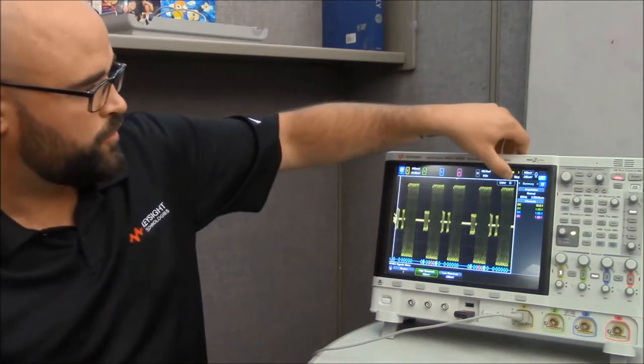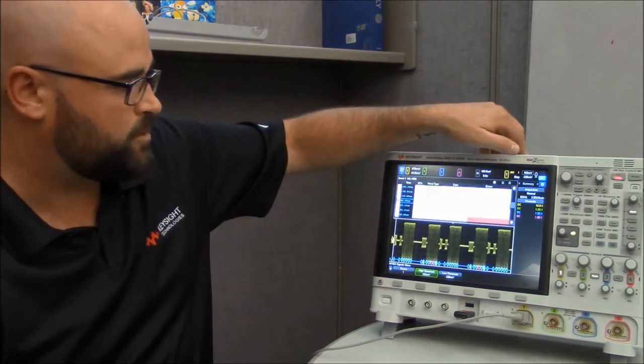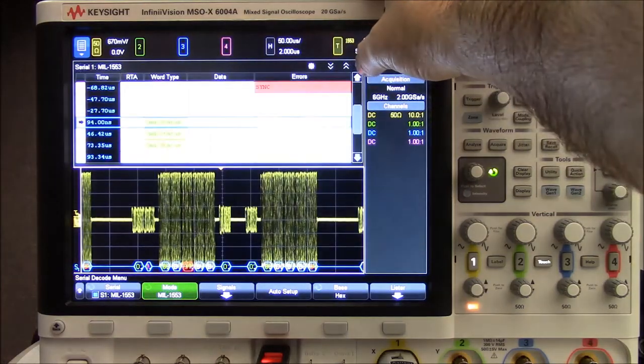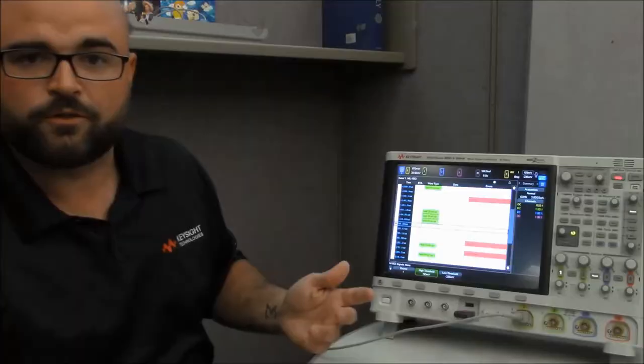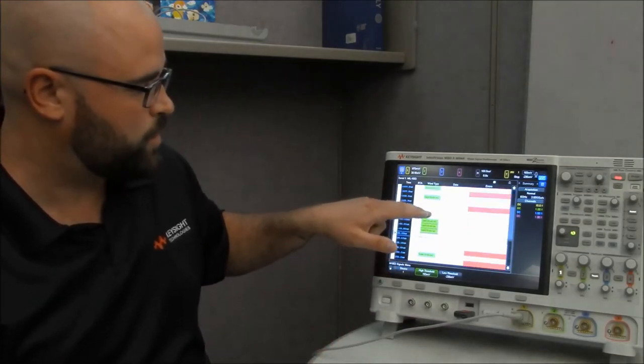Now the Lister feature sits right up here in the top right hand corner of the Graticule. Simply tap the drop down box and I can do a half screen Lister as you see here, or I can press the double down chevron once more and get a full screen Lister. What this allows me to do is go through and see exactly what I'm decoding.